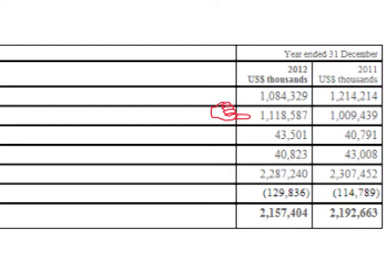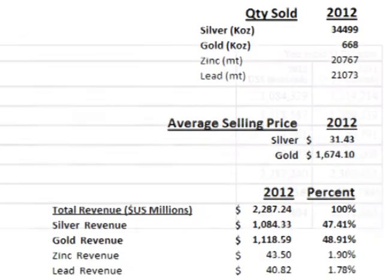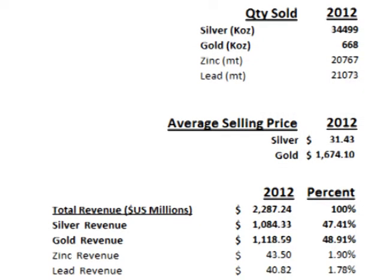About 1.1 billion or 48.91% came from gold, and about 83 million or three and a half percent came from zinc and lead. Section 4 also gives the average selling price for silver, which can be confirmed by dividing the revenue of 1.84 billion dollars by the amount of production of 34.5 million ounces.